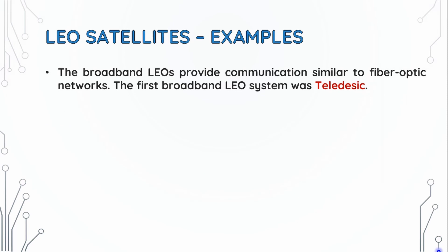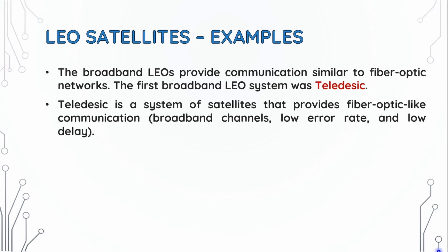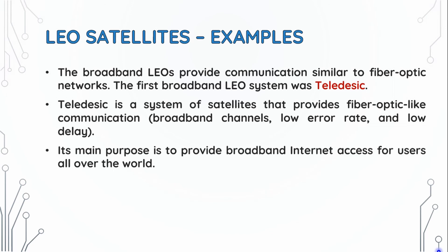Broadband Leos provide communication similar to fiber optic networks. The first broadband LEO system was TELEDESIC. TELEDESIC provides fiber optic-like communication, offering broadband channels, low error rate, and low delay. Its main purpose is to provide broadband internet access for users all over the world, and it is sometimes called 'internet in the sky.'